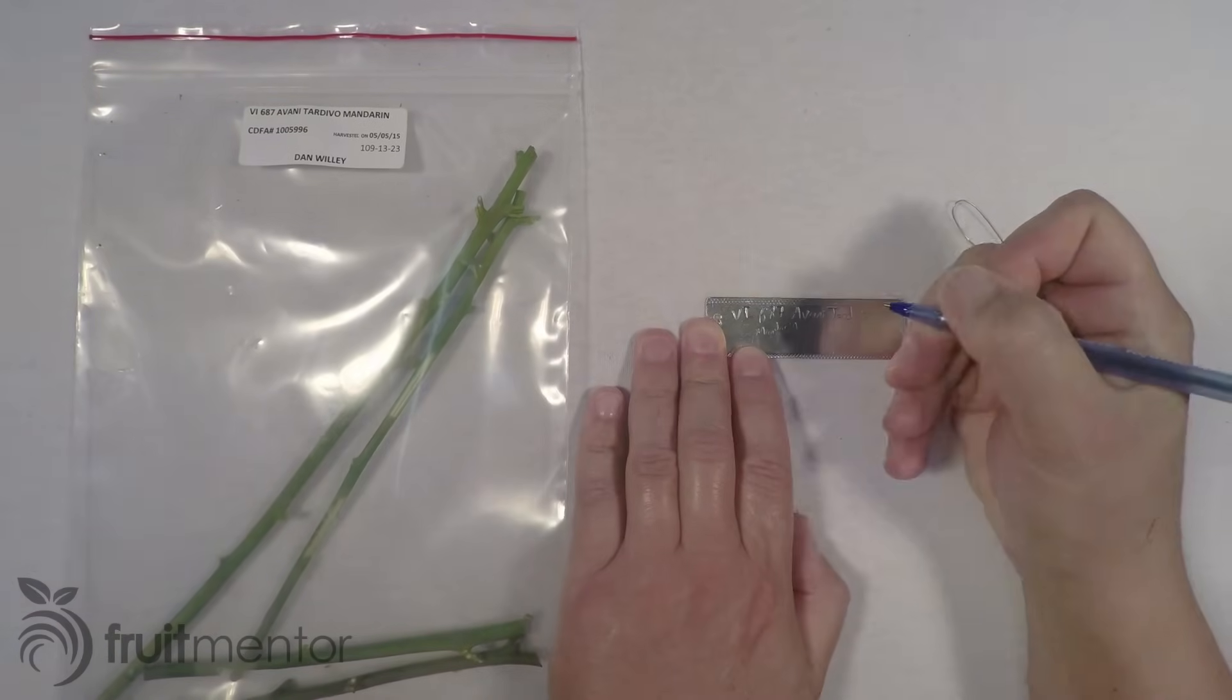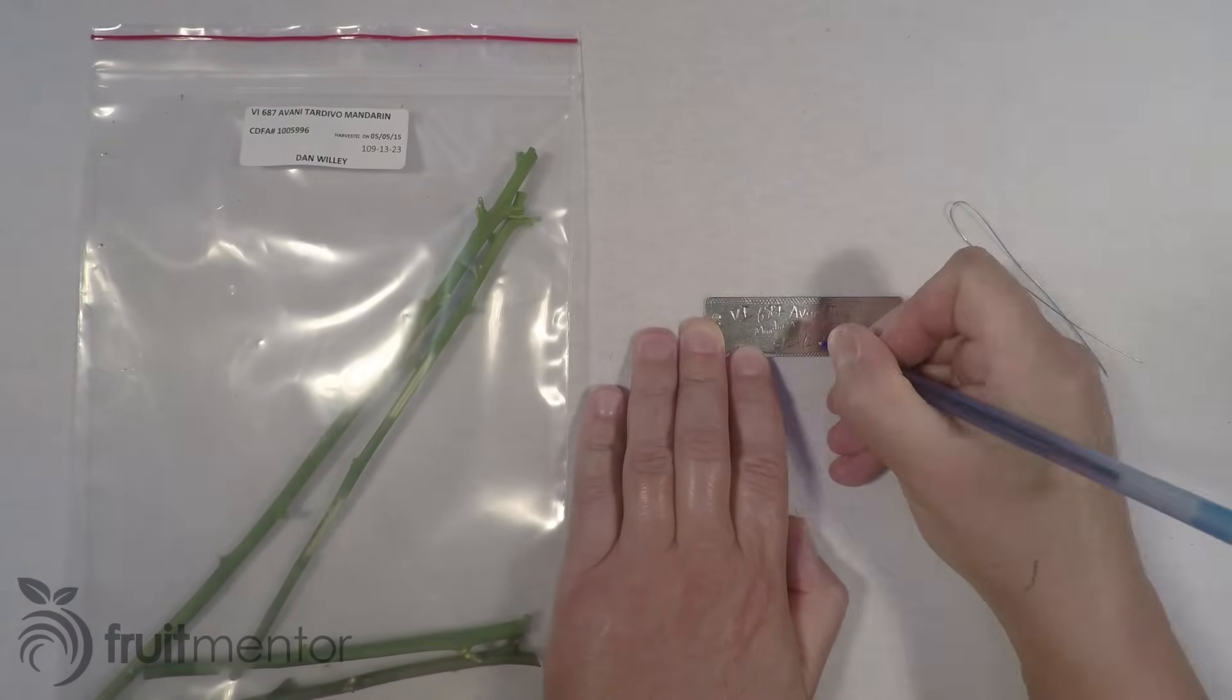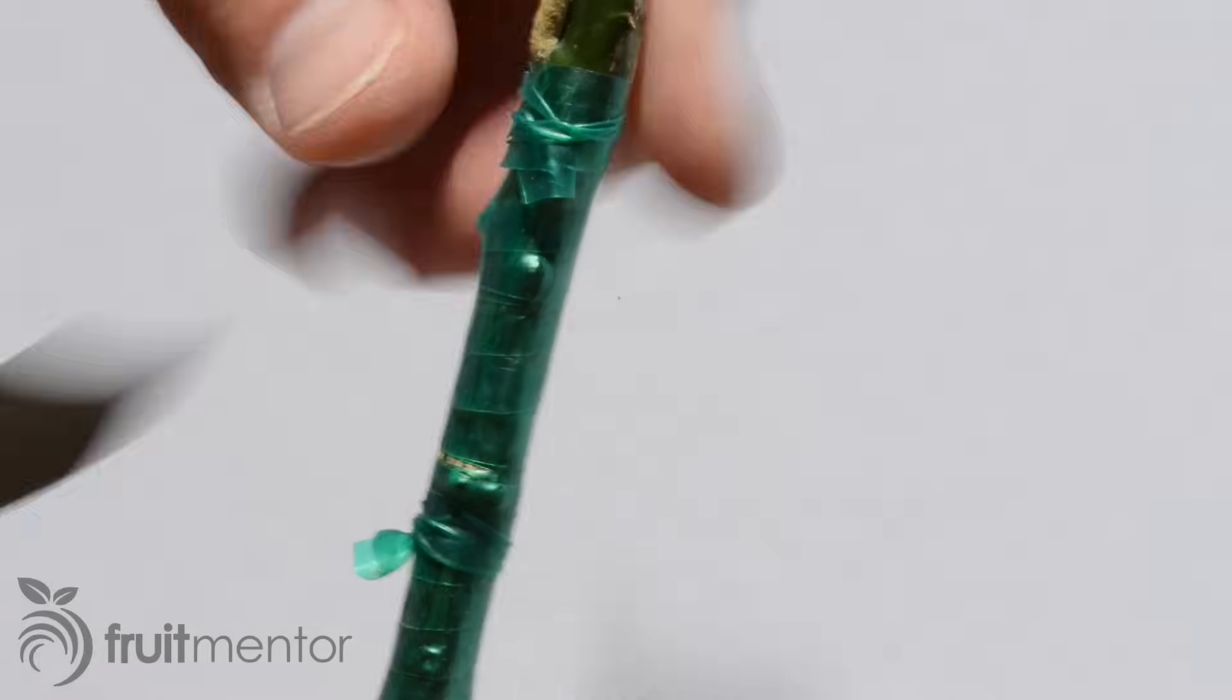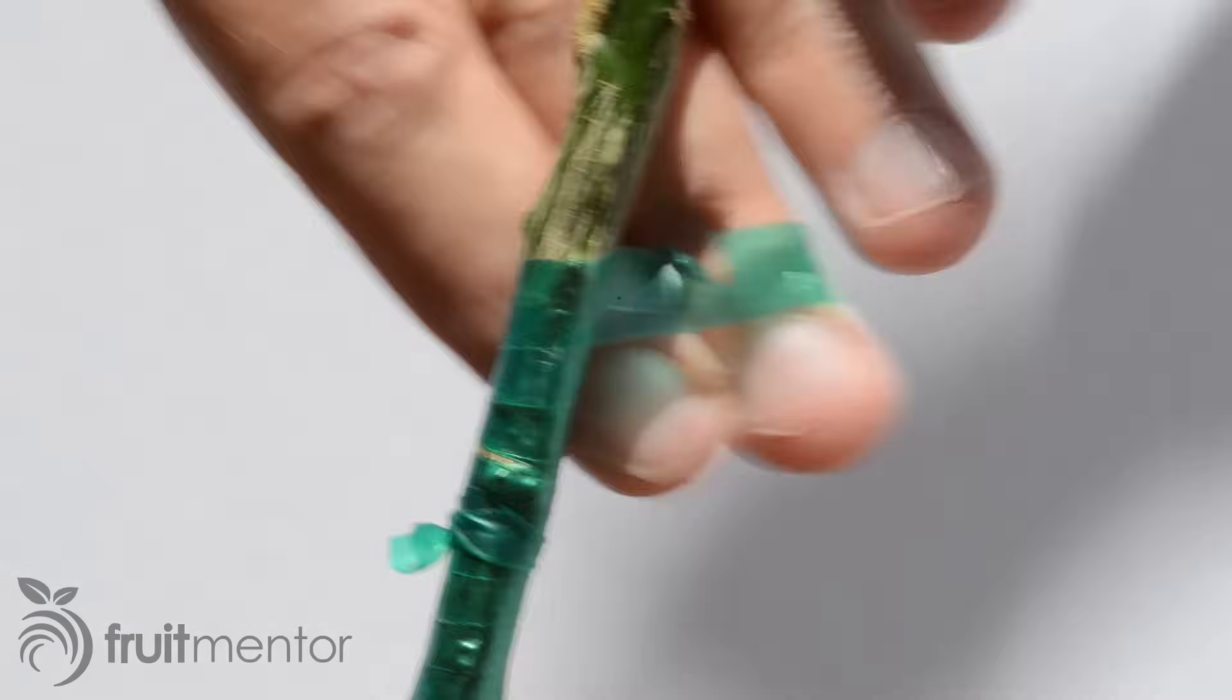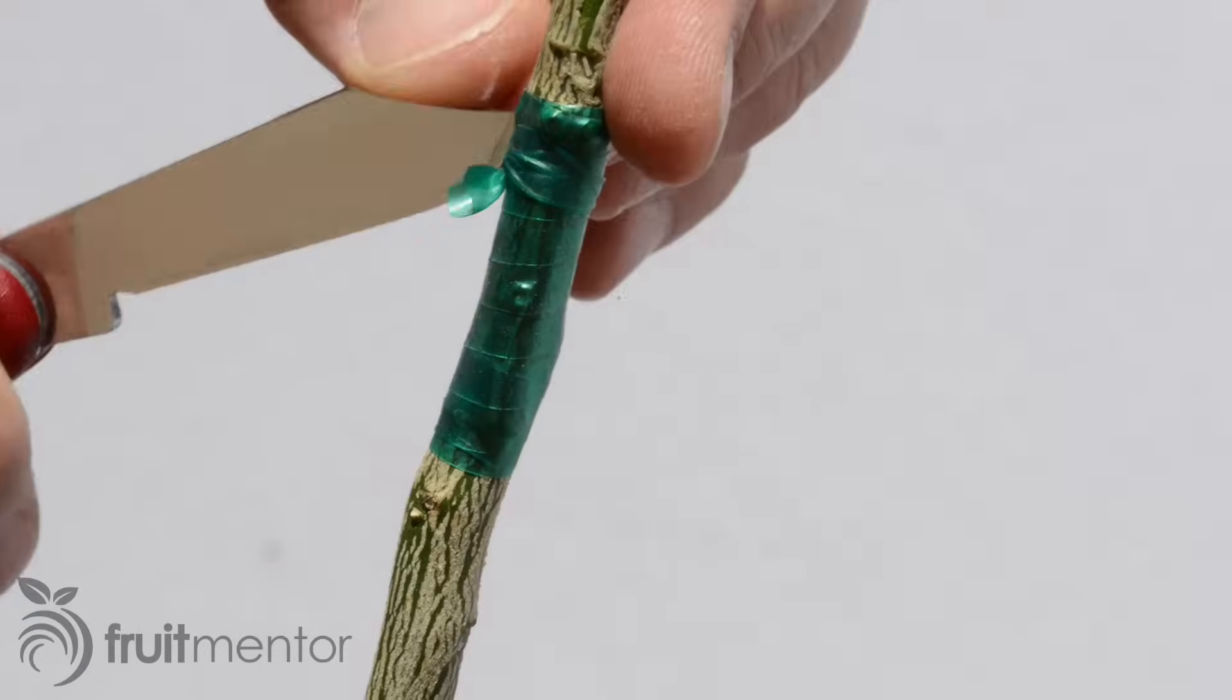Whenever I graft a tree, I make a label with the variety name and the date. After the grafts are finished, I move the tree to a shady area for a three-week healing period.